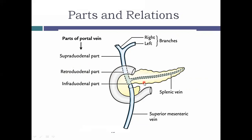Regarding anterior relations: the infraduodenal part's anterior relation is the neck of the pancreas. The retroduodenal part has the first part of the duodenum anteriorly, along with the gastroduodenal artery and the bile duct. The supraduodenal part's anterior relations are the hepatic artery and the bile duct.